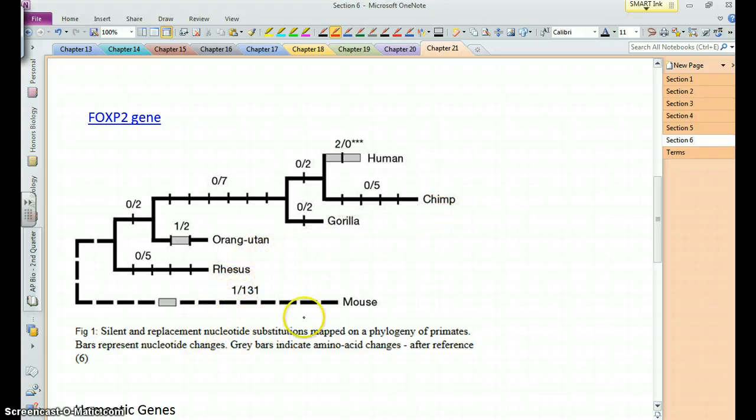And then sort of this more outlier group, the mouse, which is not a primate like these others. And so you can see each little bar here, each notch if you will, represents a single nucleotide change, whereas the gray bars represent amino acid change, which within this gene and the protein that's made from it. And so it just shows how this gene has evolved and allowed for differentiation of these different species.